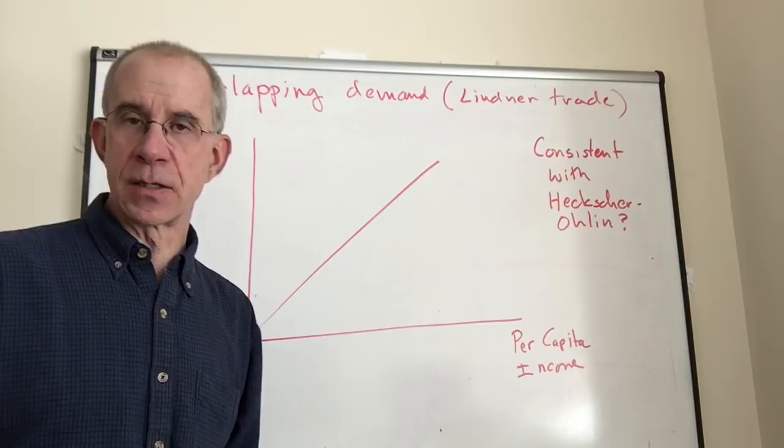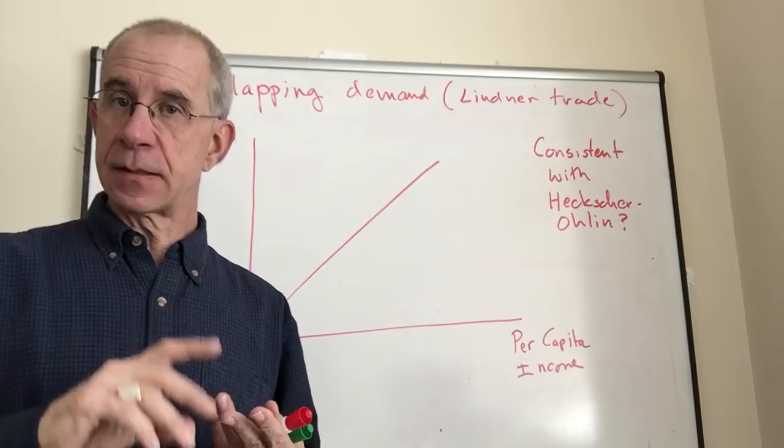The Heckscher-Ohlin and Ricardian models, the standard models of international trade, provide a lot of insights, but they don't explain everything.